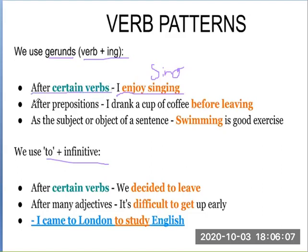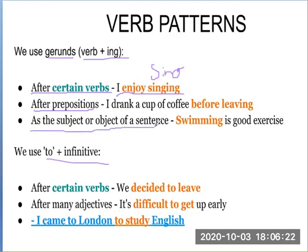Gerunds are also used after prepositions. For example: I drank a cup of coffee before leaving — here 'leave' becomes 'leaving' with preposition plus -ing, giving a gerund. Gerunds can also be used as the subject or object of a sentence. For example: Swimming is a good exercise.